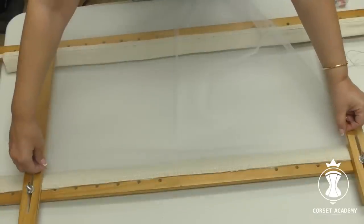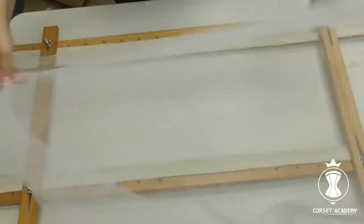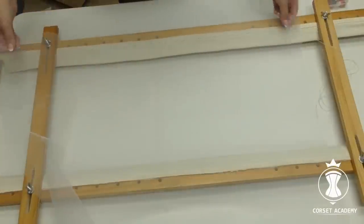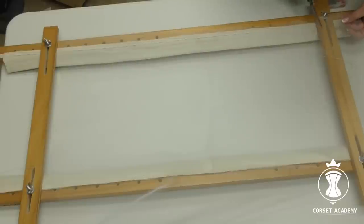I measure and cut the mesh along the length, making it 1 to 2 cm shorter than the distance between the vertical bars. It is important to have a straight rectangle for the mounting.